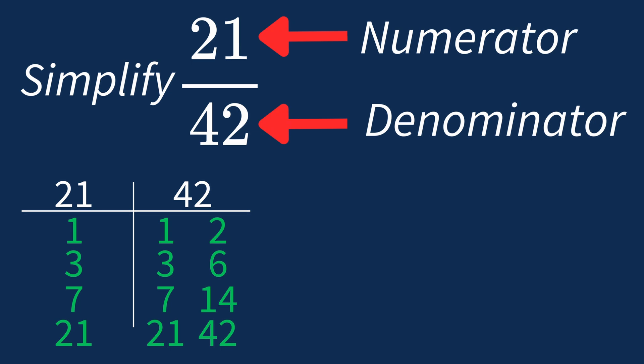So the largest common factor between 21 and 42 is 21. This means we can divide both the numerator and denominator by 21 to simplify the fraction.